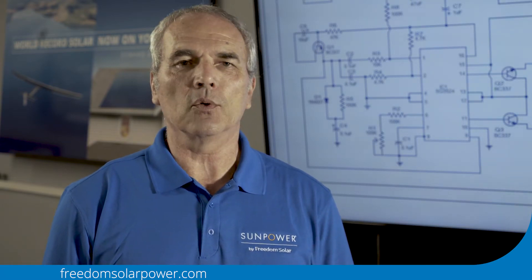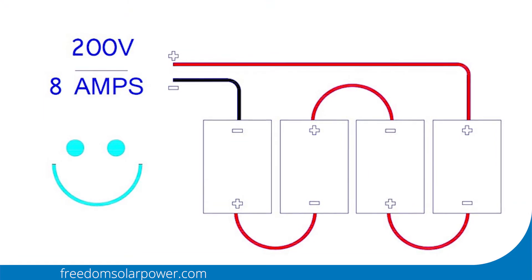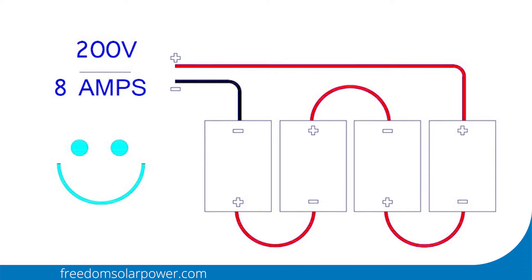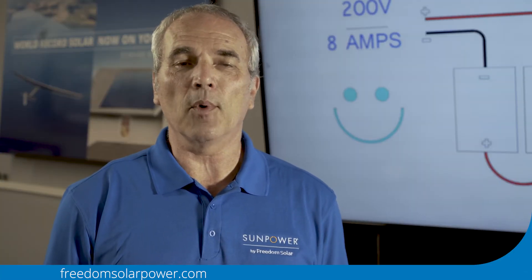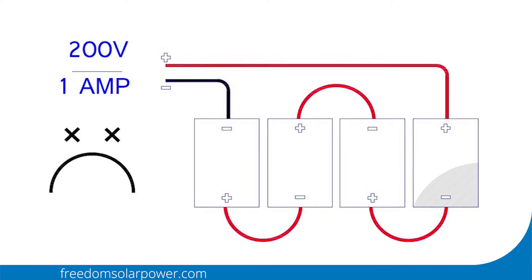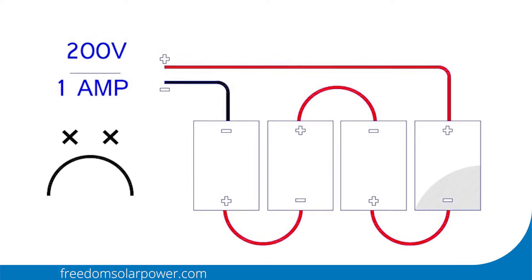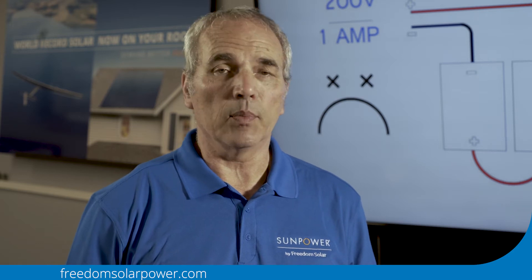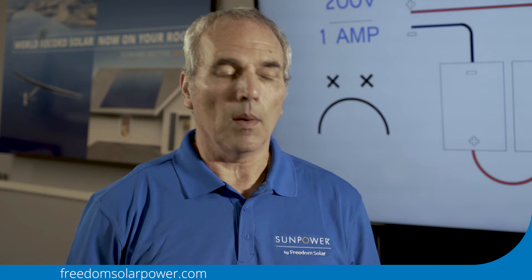The first technology we'll be discussing is string inverters. String inverters take the DC energy from your panels and turn it into usable energy for your home, and they work great as long as the sun is shining brightly. Even a small amount of shade can severely impact the performance of a system — even one panel being shaded can reduce performance by as much as 80%. So other technologies emerged to mitigate shading issues.